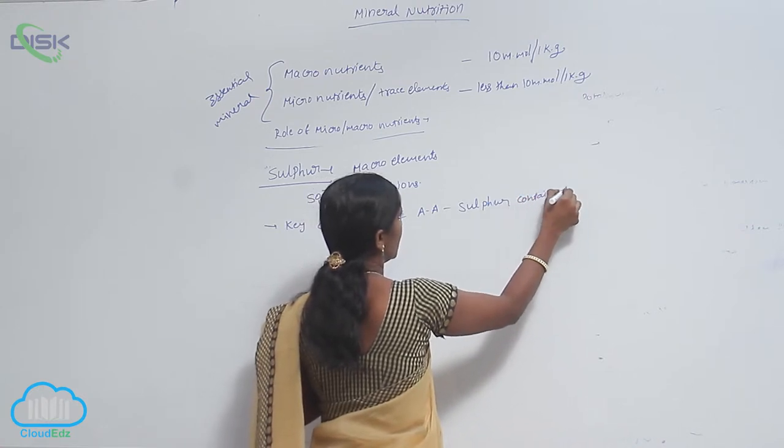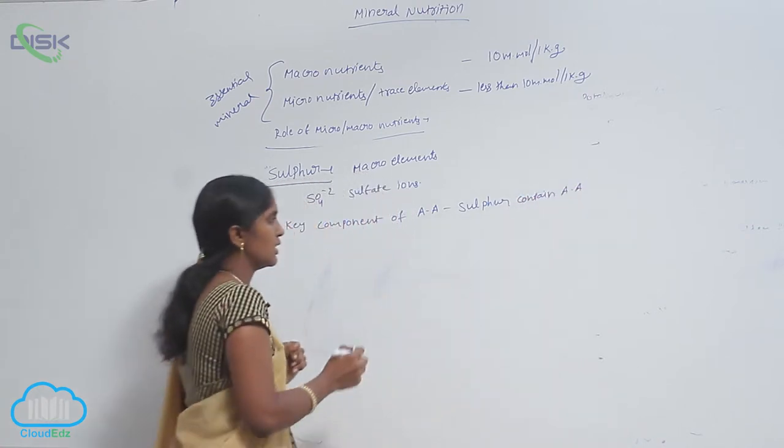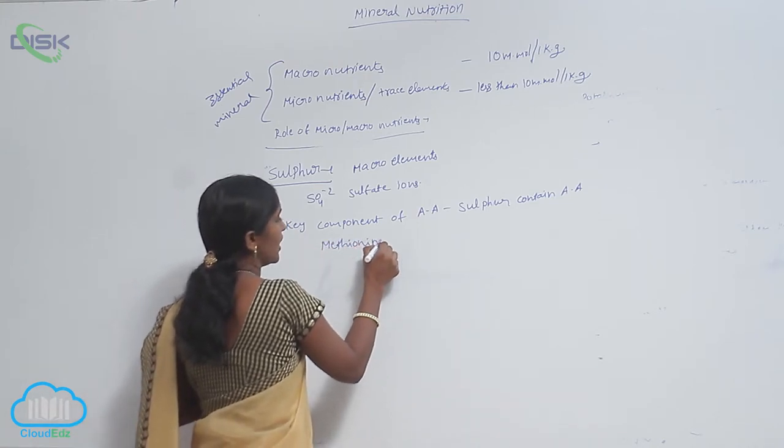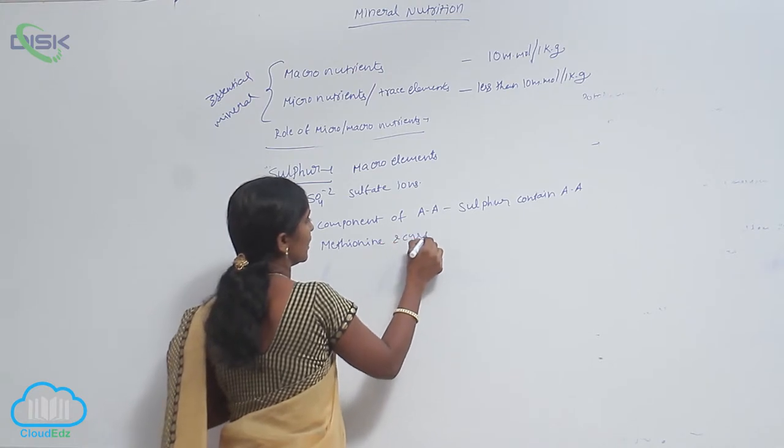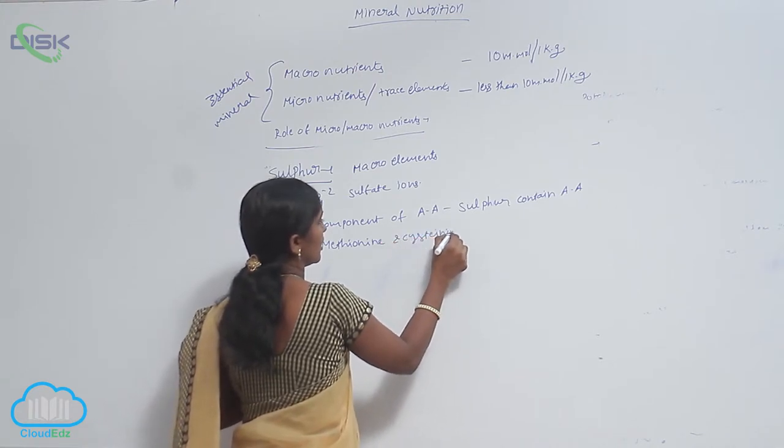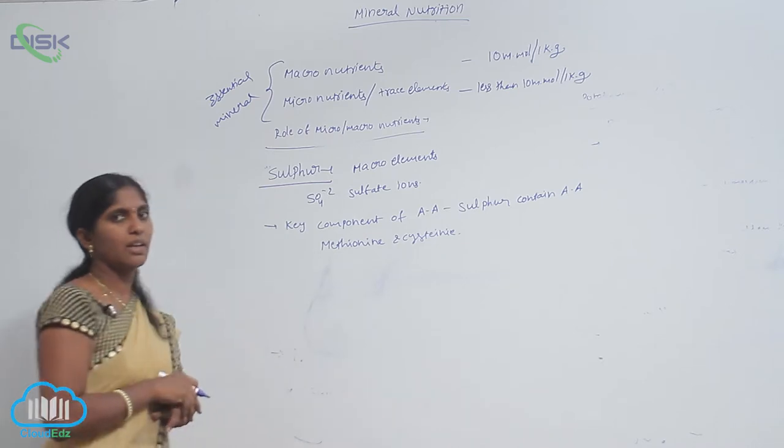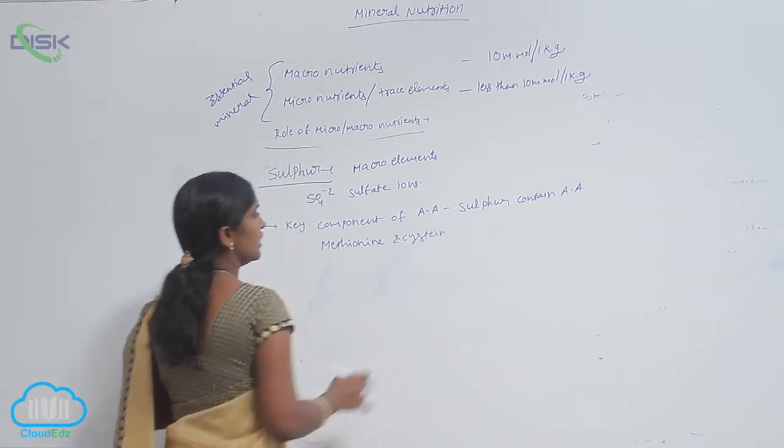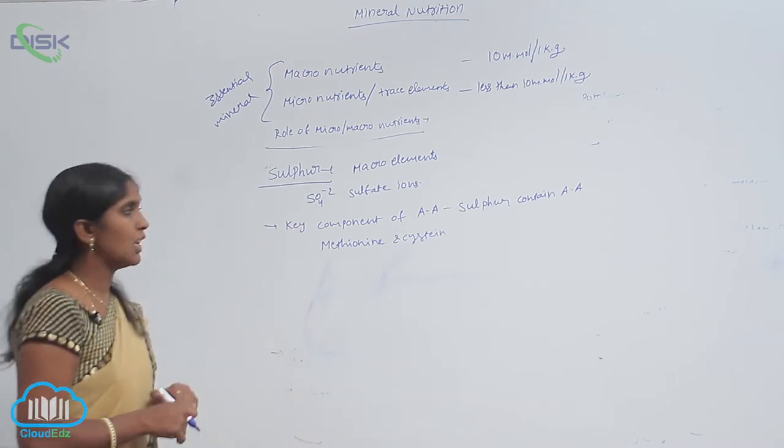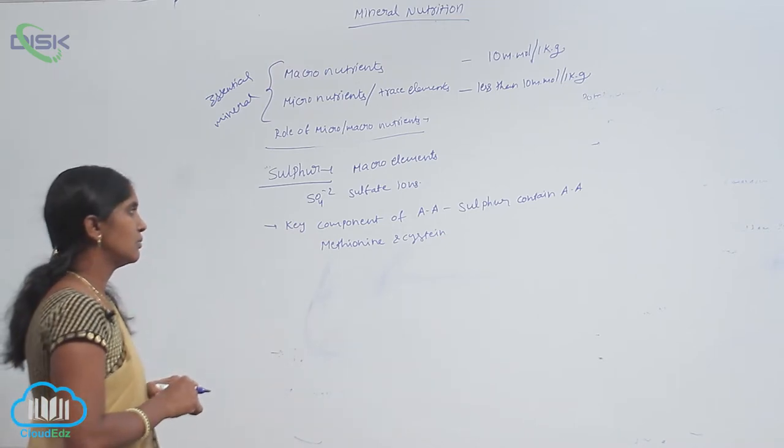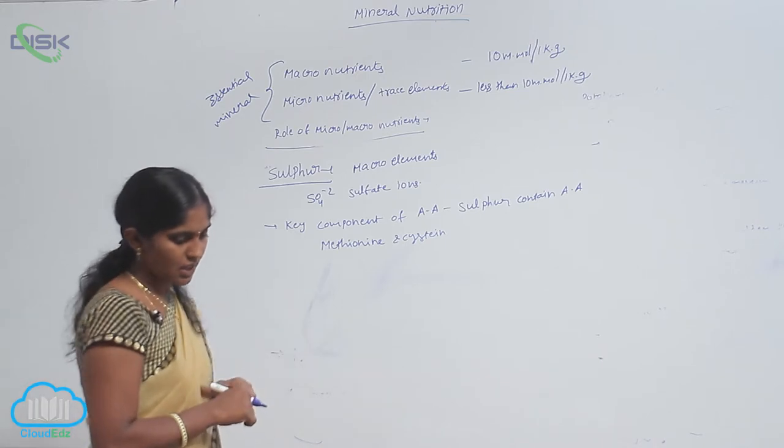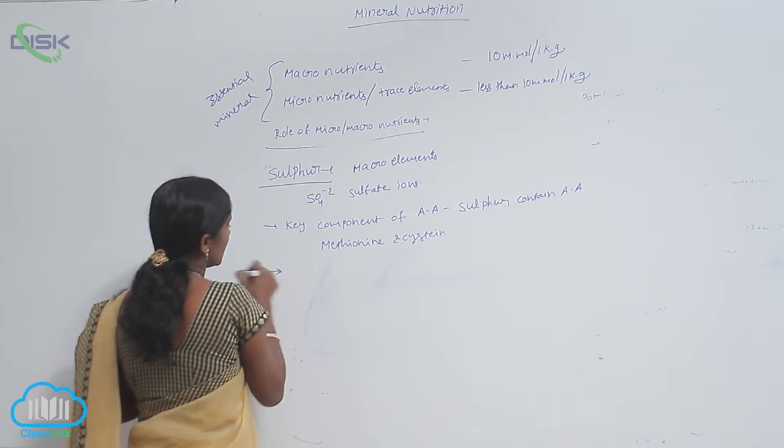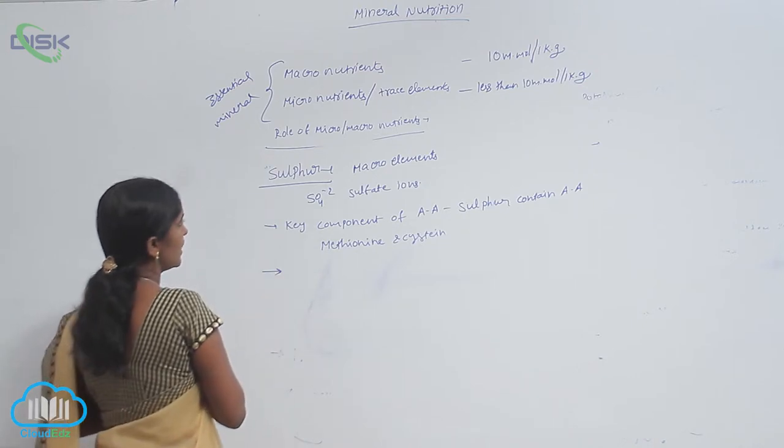Sulfur-containing amino acids are methionine and cysteine. These two are sulfur-containing amino acids, and in many enzymes the sulfur also acts as a component.